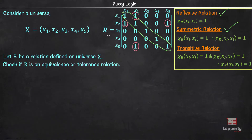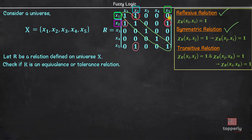Now, let us check if R is transitive. To prove transitivity, we should check for every possible combination in this matrix. However, if we can find at least one violation of the definition of transitivity, then we can say that relation R is not transitive. Here, χ(X1, X2) = 1 and χ(X2, X5) = 1. Then, for relation R to be transitive, χ(X1, X5) should also be 1. But as you can see, χ(X1, X5) is equal to 0 — that is, it is not equal to 1. So, relation R is not transitive. Since R is reflexive and symmetric but not transitive, R is a tolerance relation.